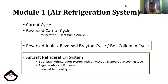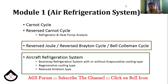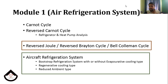The second section is the Aircraft Refrigeration System. In the Bell-Coleman cycle, we have an application of the Aircraft Refrigeration System. This includes the Bootstrap Refrigeration System, Bootstrap with Evaporative Cooling, Bootstrap without Evaporative Cooling, the Regenerative Cooling type, and the Reduced Ambient Cycle. There are problems related to all these topics.